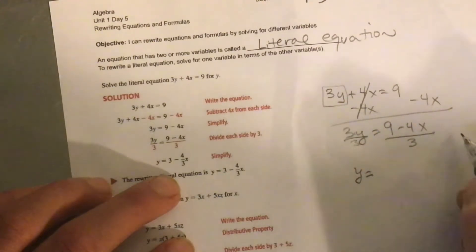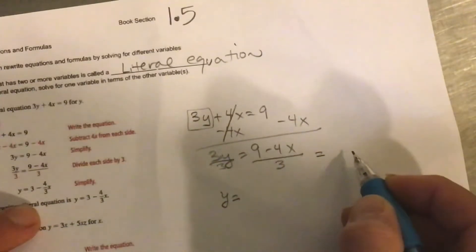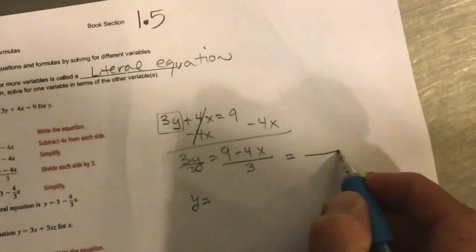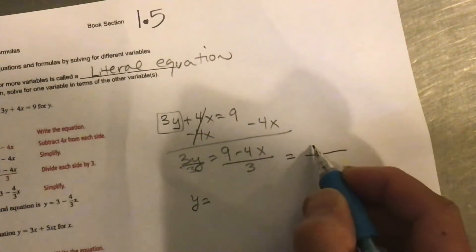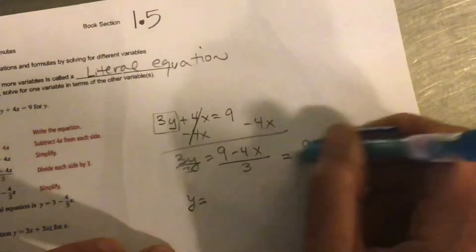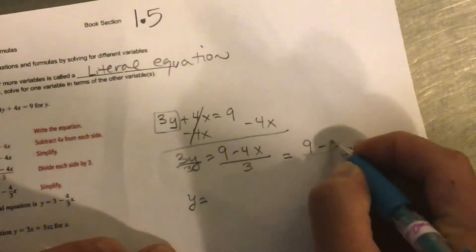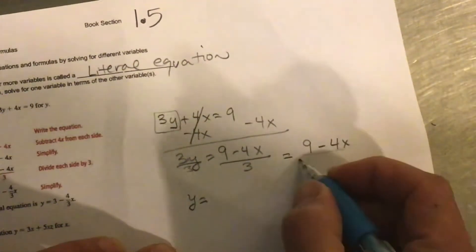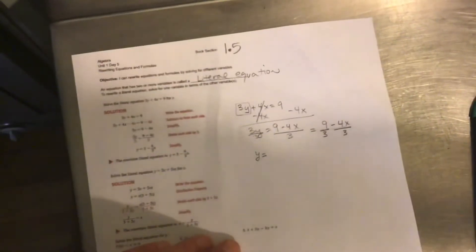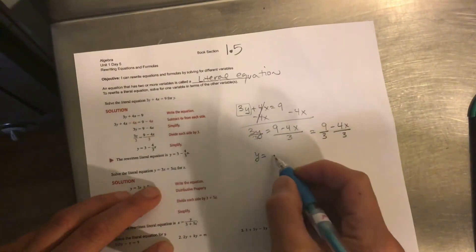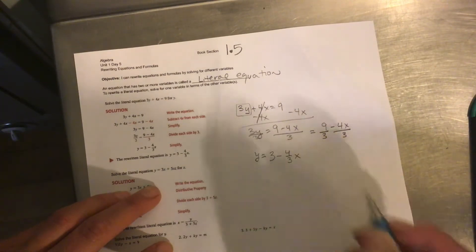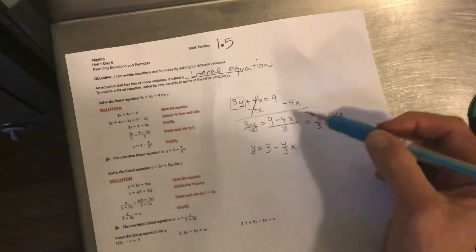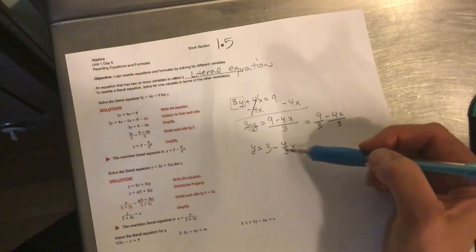So you might think of this. I'm going to show you over here how else you might think of this. You might think of, when you've got 9 minus 4x, you're going to take each term and divide by 3. That's essentially what you're doing. So if you notice, 3 divided by 9, 9 divided by 3 is 3. And negative 4x divided by 3 is negative 4 thirds x.